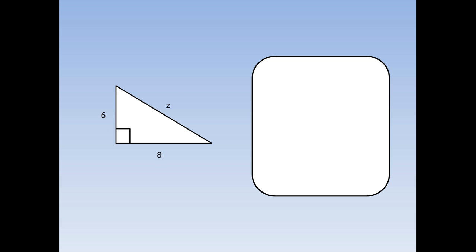For this problem, again we've been asked to work out the hypotenuse. a and b are equal to 6 and 8, and it doesn't really matter which way round they go. Write out Pythagoras' theorem: c squared equals a squared plus b squared. Fill in the numbers — a is 6 and b is 8. 6 times 6 is 36, and 8 times 8 is 64. 36 plus 64 is 100.